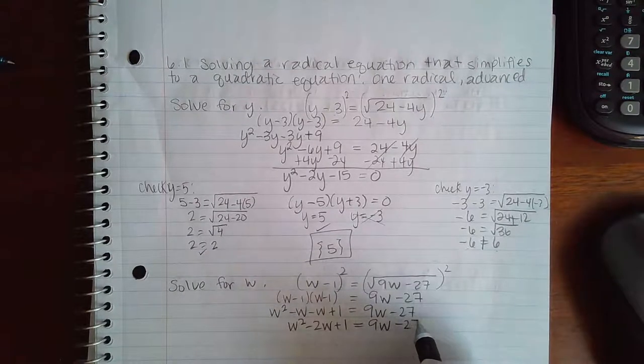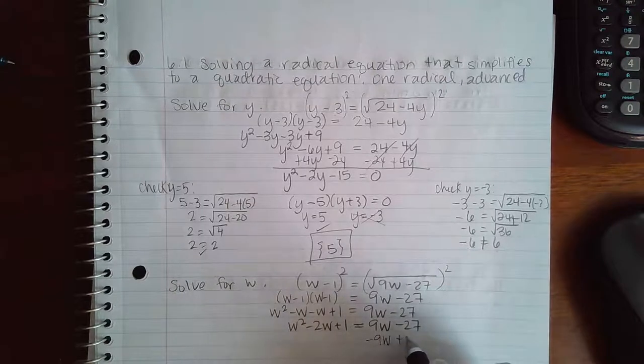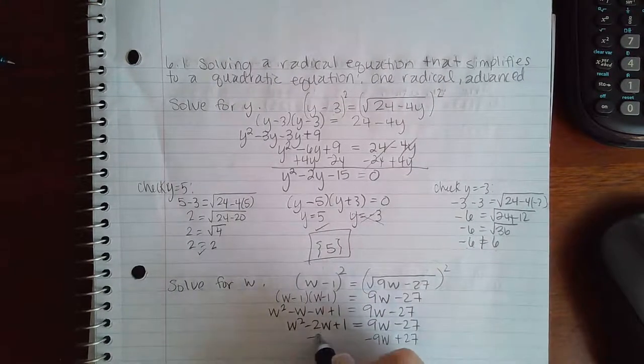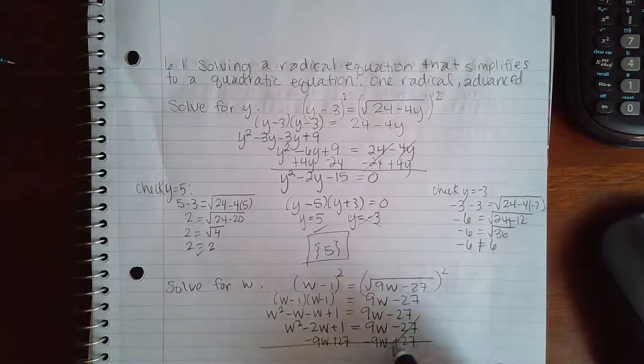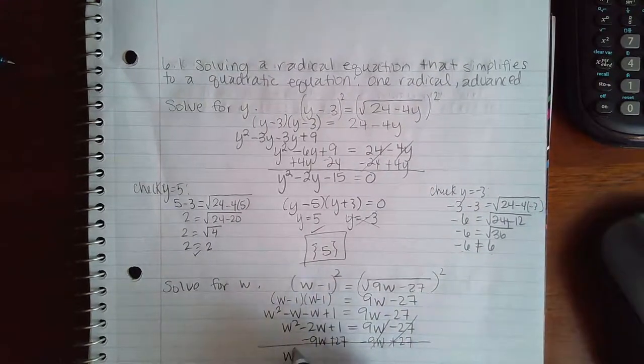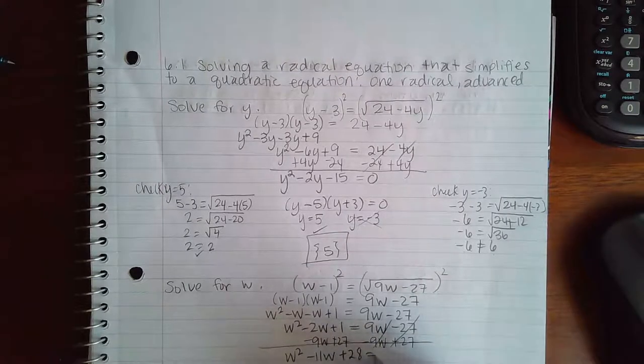And then I do have a quadratic because of w squared, so I'm going to move these two terms over to the left-hand side. So then when I'm finished, I end up with w squared minus 11w plus 28 equal to 0.